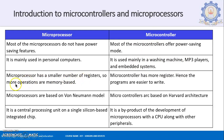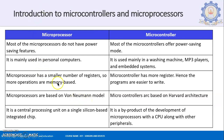A microprocessor has a smaller number of registers, so more operations are memory-based — if you want to do a task, you have to fetch data from external memory. Whereas in a microcontroller, it has more registers inside, so the programs are easier to write — internal registers in the microcontroller are much higher compared to the microprocessor. Microprocessors are based on the Von Neumann model, whereas microcontrollers most commonly use the Harvard architecture, though Von Neumann is also found. We will look into them in detail in a few slides.